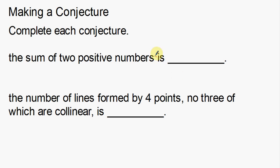Complete each conjecture — it looks like we're just completing the sentence. The sum of two positive numbers is what? I don't have a word bank, so let's think about this. One great thing to do here is to try a couple of examples to see what logical conclusion they want you to come to. When we talk about positive numbers, we're talking about numbers like 1 and 2. So 1 plus 2 is 3.